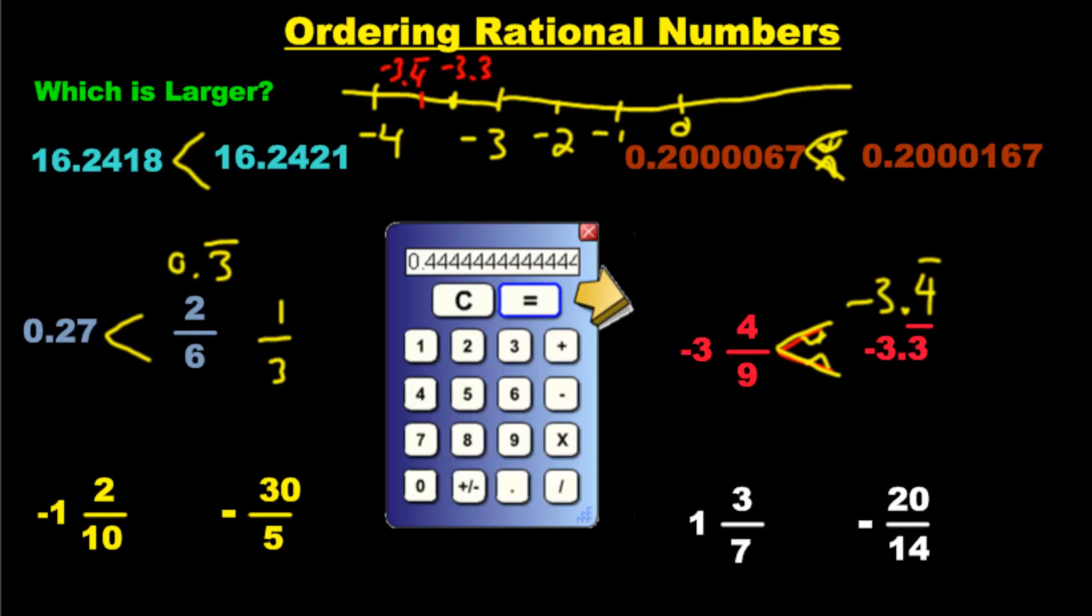So we're going to write 12 over 10. We have 12 over 10 and negative 30 over 10. Not really. This is negative 30 over 5. We need to times this by 2, times that by 2. And now we've got negative 60 over 10 versus 12 over 10. Put the negative here. Which one is larger? Is negative 12 larger or is negative 60 larger? Because the denominators are the same, so we can ignore them now. Look at the tops. Which is bigger?